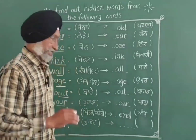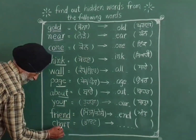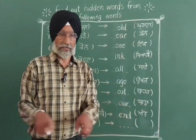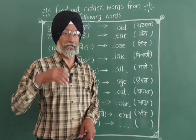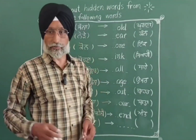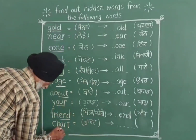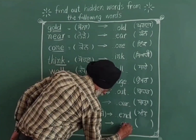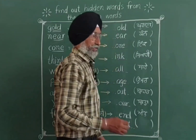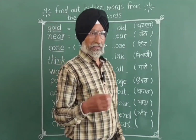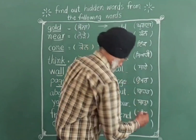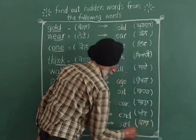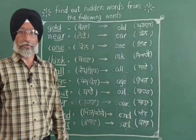The next word is CHART. A chart is a big page with colors or white, which you can see displayed visually. Hidden inside CHART is the word ART. Art means 'kala' (art). So this is the topic — finding hidden words, like ART inside CHART.